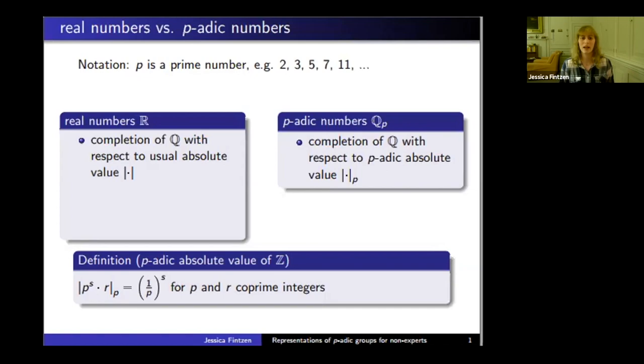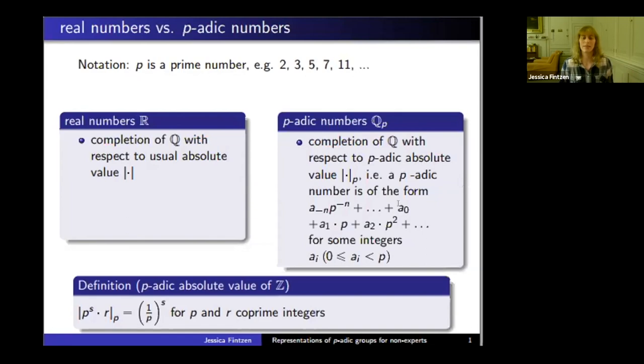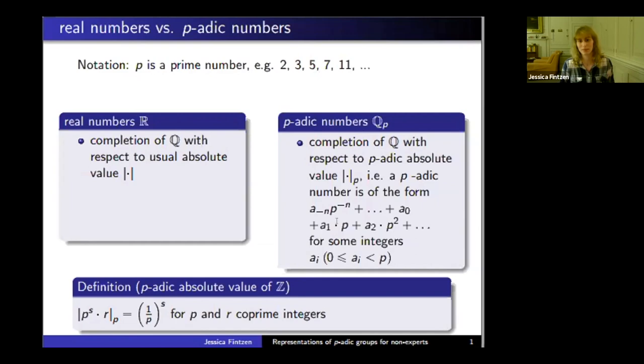Then we take the completion, which means p-adic numbers have the form of a power series in p where we allow finitely many negative exponents: a minus n times p minus n, plus a zero, plus a one times p, a two times p squared, and so on.